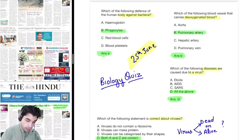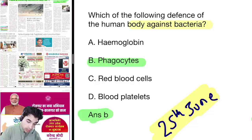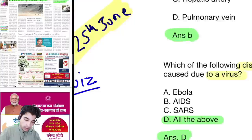Today is 26th of June 2020. Let us have a quick brief of today's newspaper. Before that, here are the answers to the 25th of June quiz. First: the body's defense against bacteria is done by phagocytes.